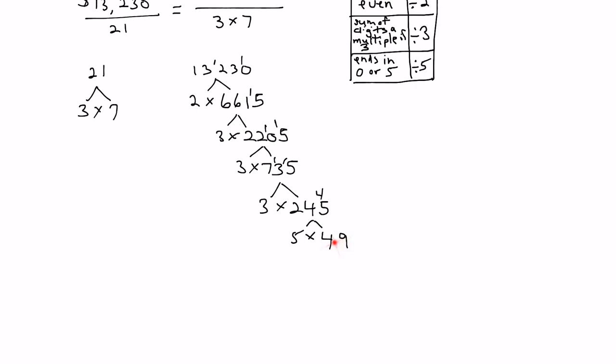We look at 49. Is it even? No. Add the digits: 4 plus 9 is 13, not a multiple of 3. Does it end in 0 or 5? Nope. So we're going to stop there.